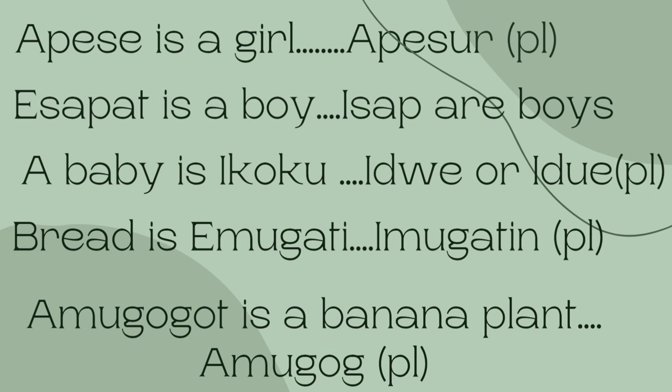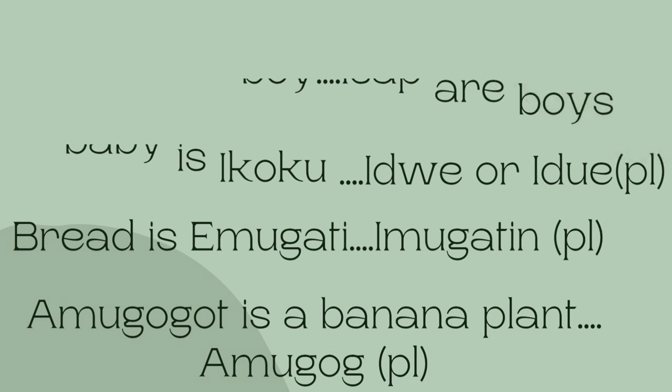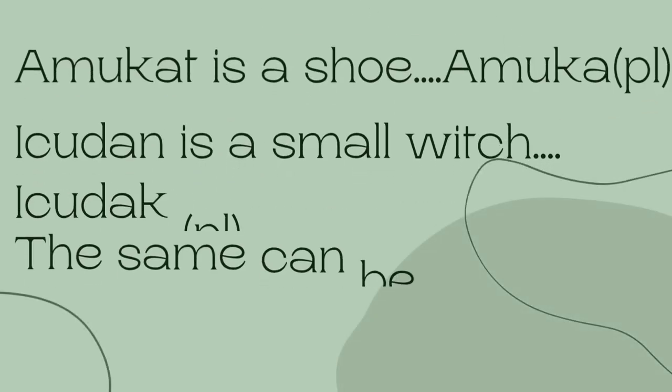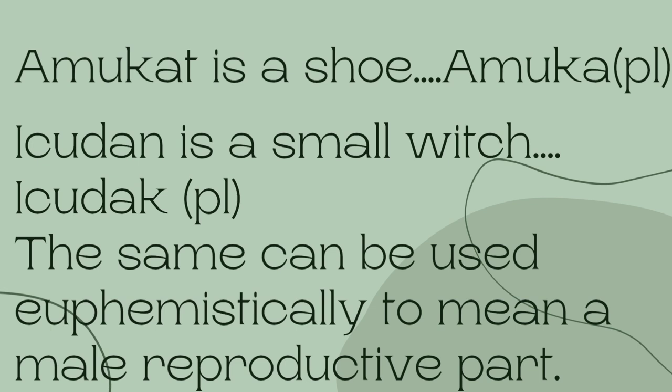Eidwe or edwe are babies. Bread is emugati. Emugatin is the plural of emugati. Amukat is a shoe. Amuk are shoes. Echodan is a small witch. Echodak is the plural.